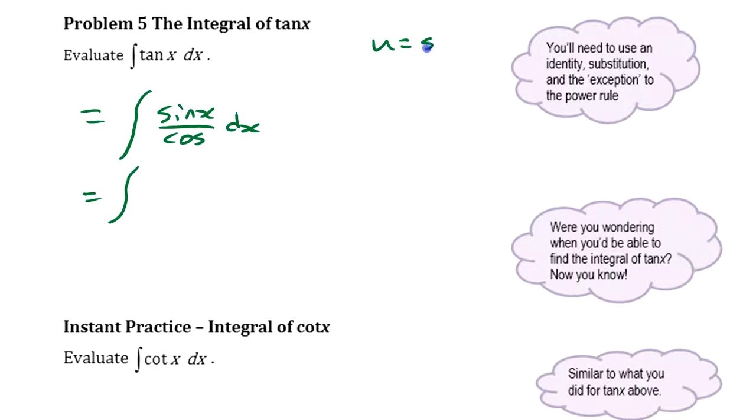I have two choices. I could say u is sine x, in which case I'd need cos x dx. But I don't have cos x dx. I have cos x on the bottom. I can't say that's cos x dx; that's 1 over cos x times dx.